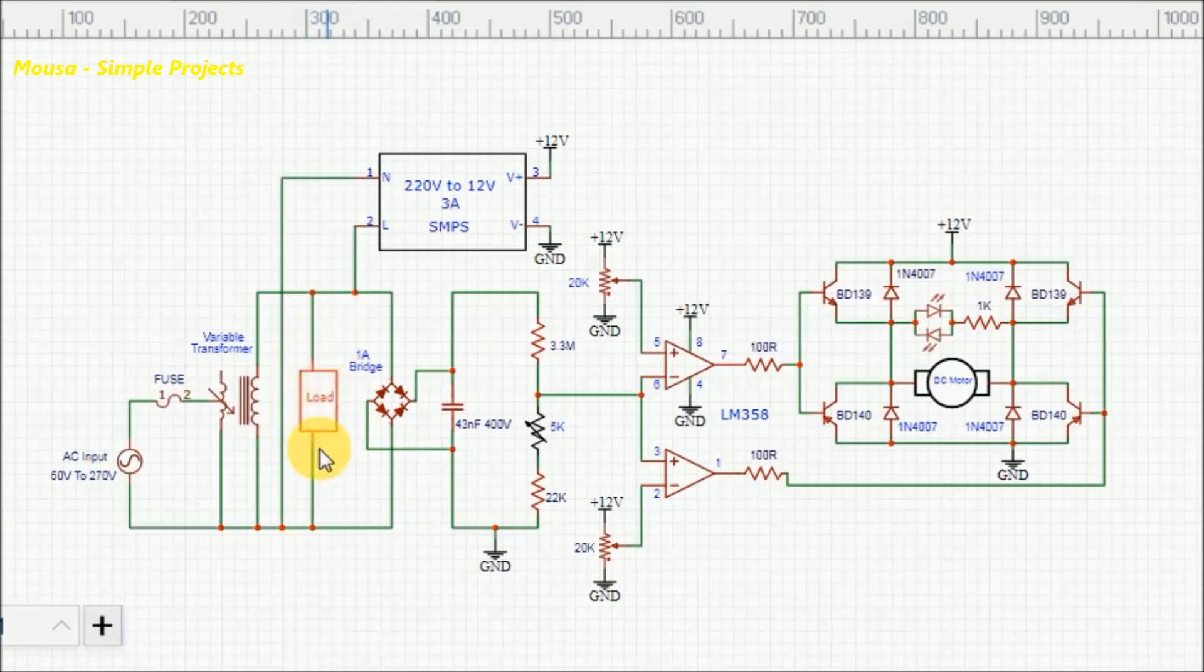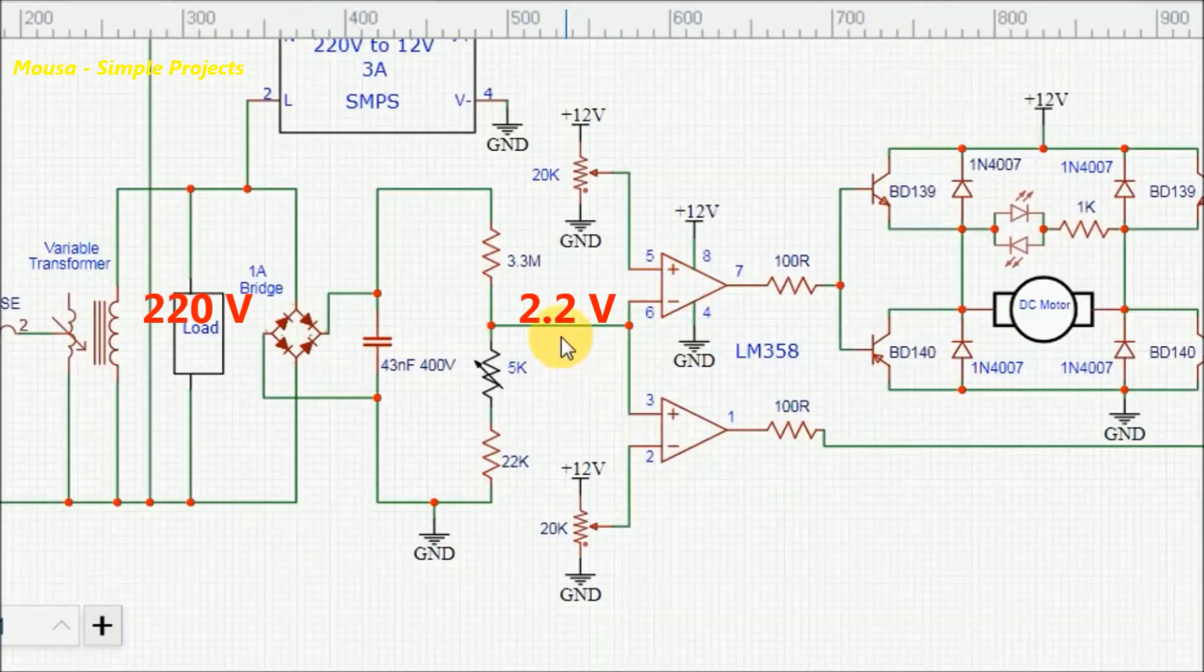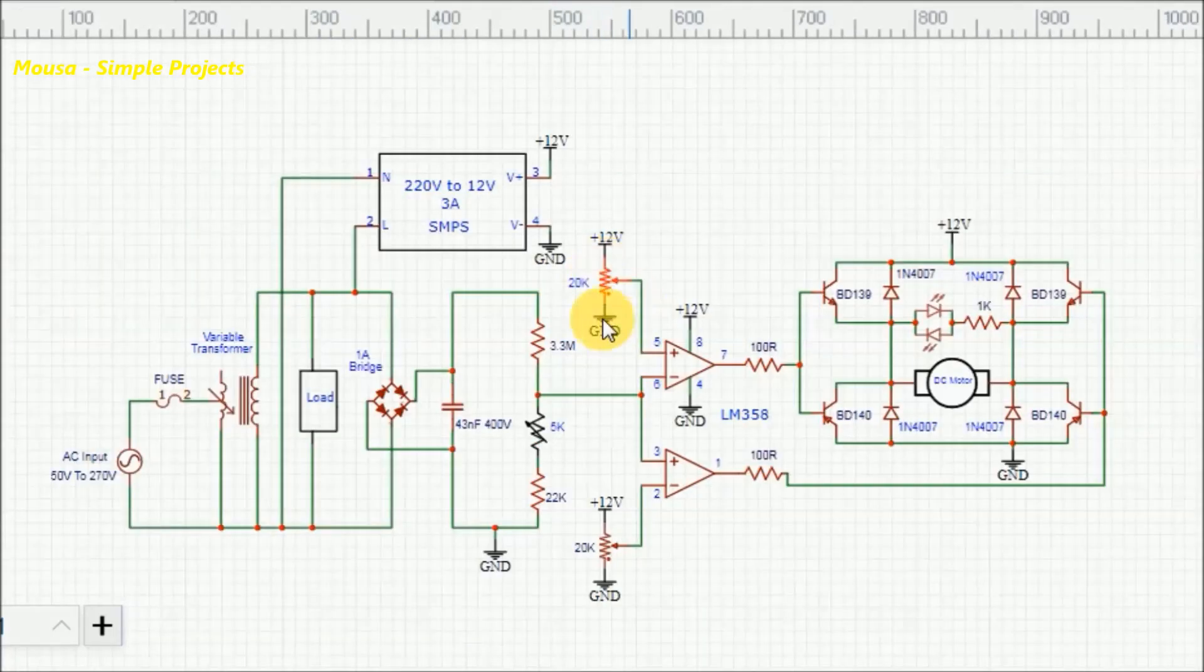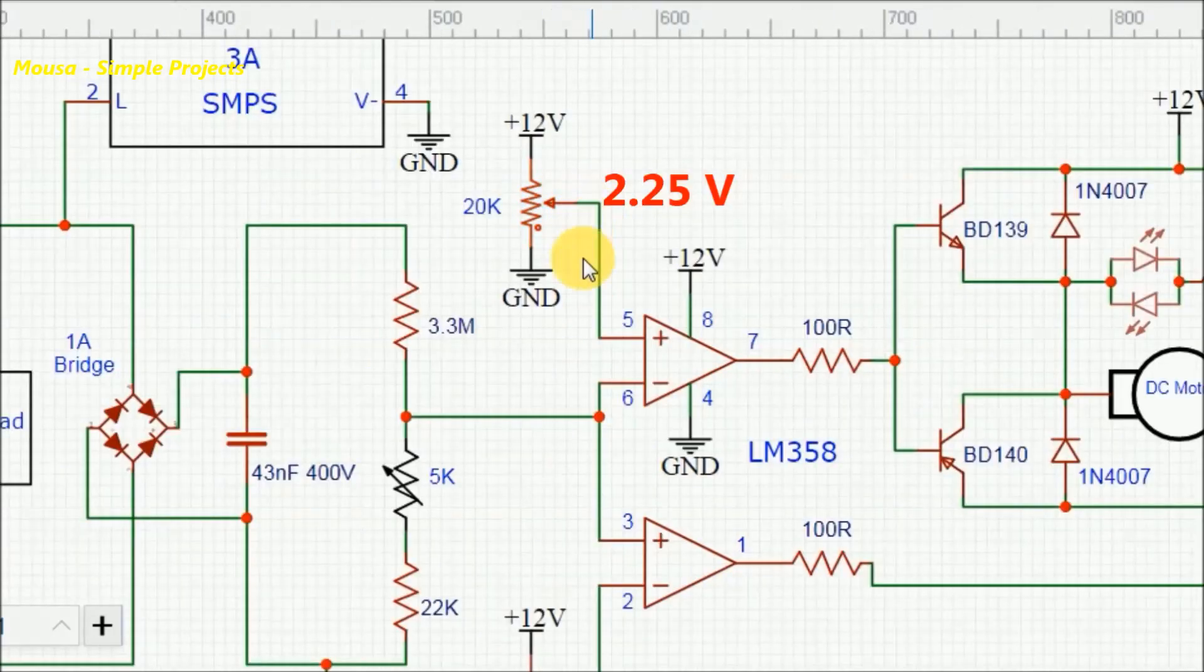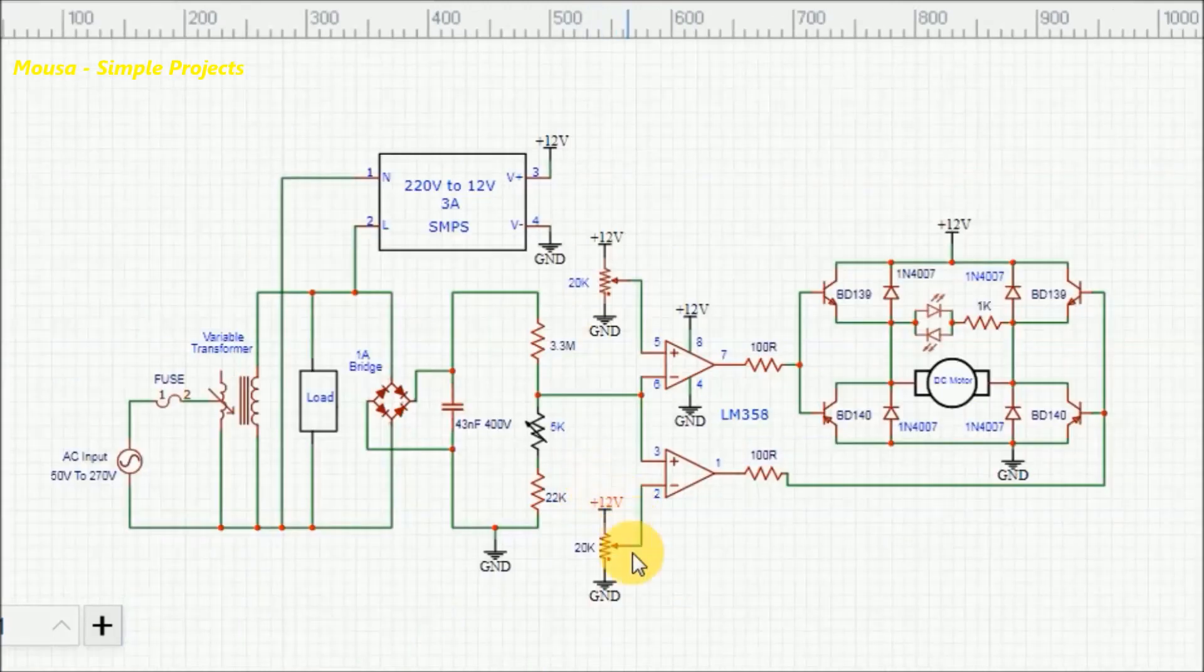For example, let's say the voltage at the secondary side of the transformer is 220 volts. So the voltage at this point should be 2.2 volts. Then you have to set the next potentiometer until the voltage at this point becomes equal to 2.25 volts. And finally, set the last potentiometer until the voltage at this point becomes equal to 2.15 volts.